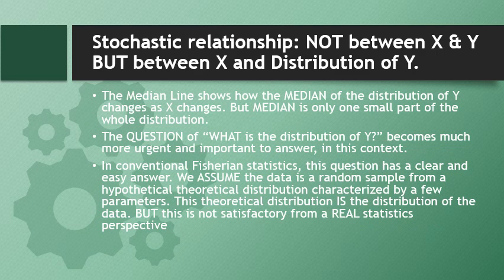The stochastic relationship is not between two individuals X and Y, but between X and the distribution of Y. It is not between the drug given to a patient and whether he recovered, but between the drug given to all patients and what happened to all of them as a whole. In conventional statistics, this question has a clear answer because we start by assuming the data is a random sample from a hypothetical theoretical distribution — normally the normal distribution.